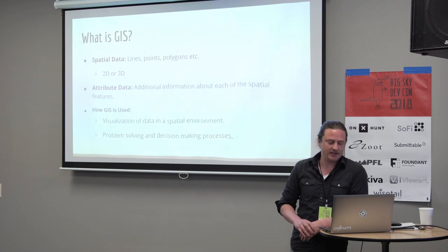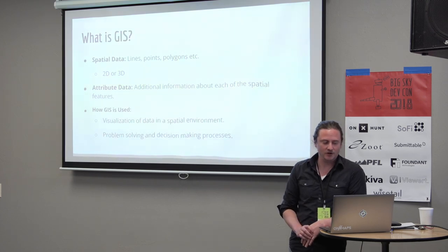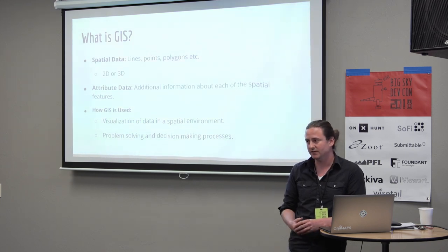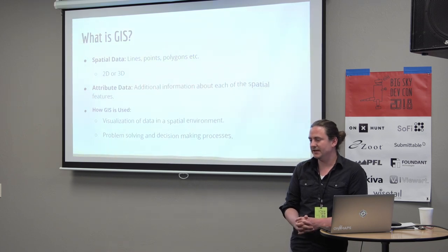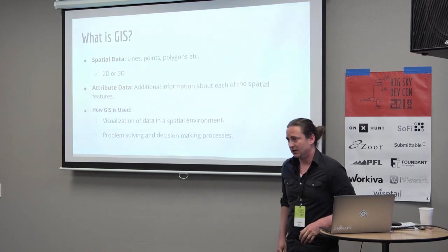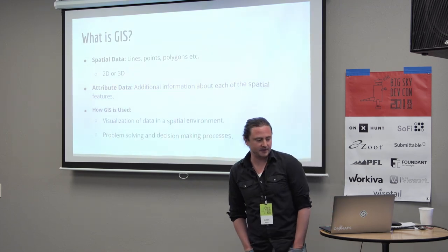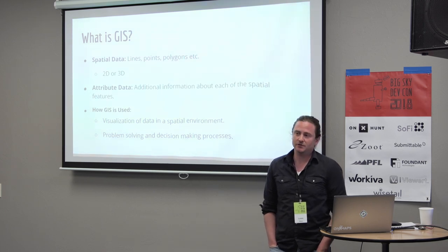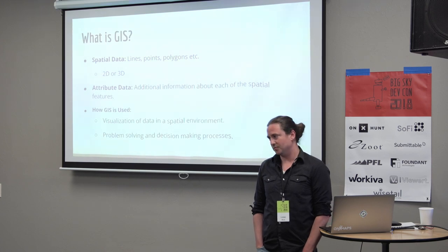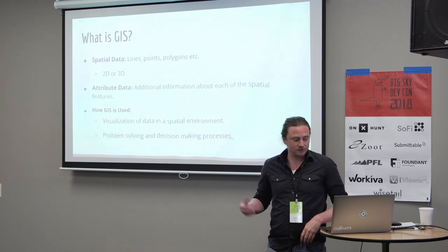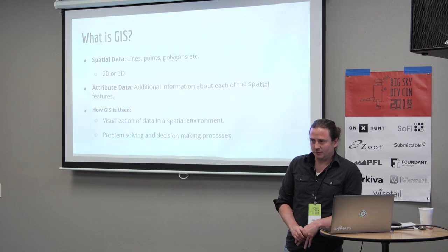If you break it down, there's spatial data and attribute data that's associated with the spatial data. So if you had data at your company about the number of support calls from each state and you wanted to display that on a heat map, the spatial information would be the outline of the state, and the attribute information would be the number of support calls from that state. The attribute data is always tied to the spatial data, so spatial data with no attribute data is meaningless.